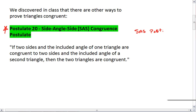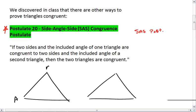And this tells us that, given two triangles, if two sides and the included angle of one triangle are congruent to two sides and the included angle of a second triangle, then the two triangles are congruent.